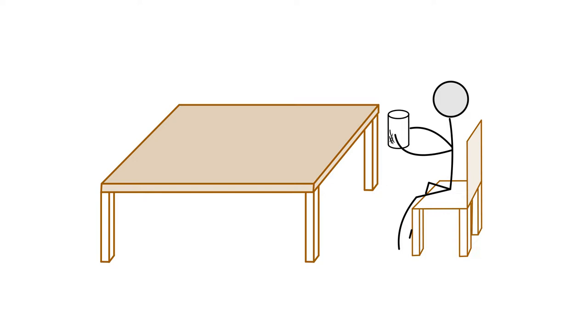Firstly, the agents at work. The focalizer is the agent that sees. In our example, the focalizer is the man at the table, as the narrative is projected through him.